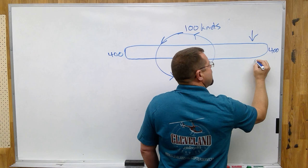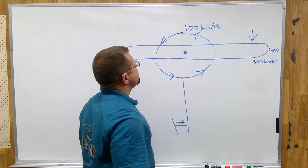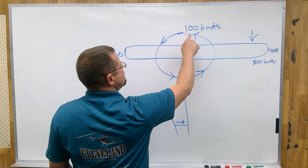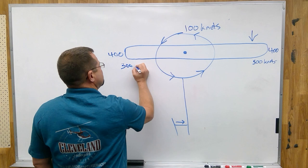So we've got 500 knots. This blade is moving away from that 100 knots, so therefore this blade is seeing 300 knots.